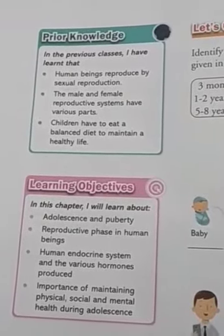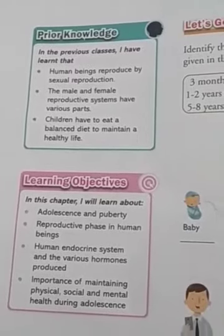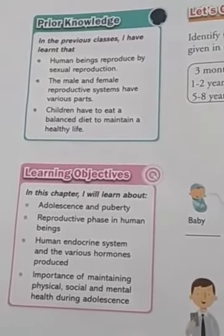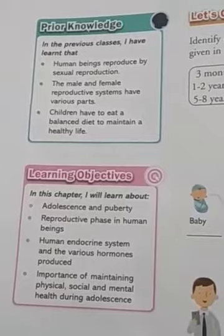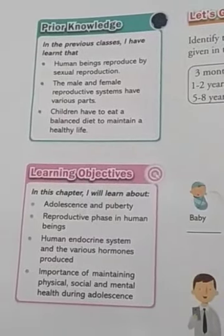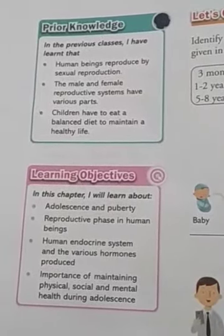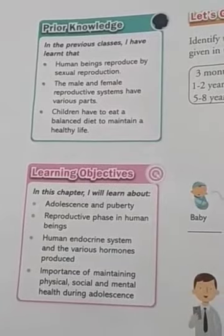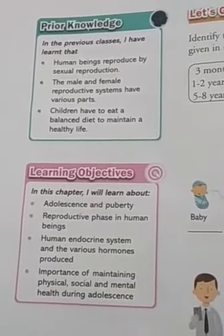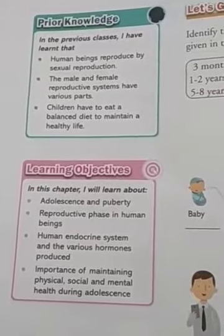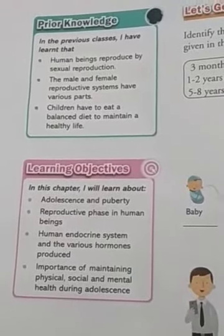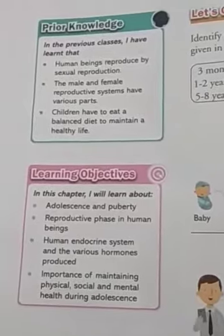Second, we will learn about the reproductive phases in human beings — what are the reproductive phases in human beings. Third is the human endocrine system and the various hormones produced — which kinds of hormones are produced in human beings and what is the endocrine system.